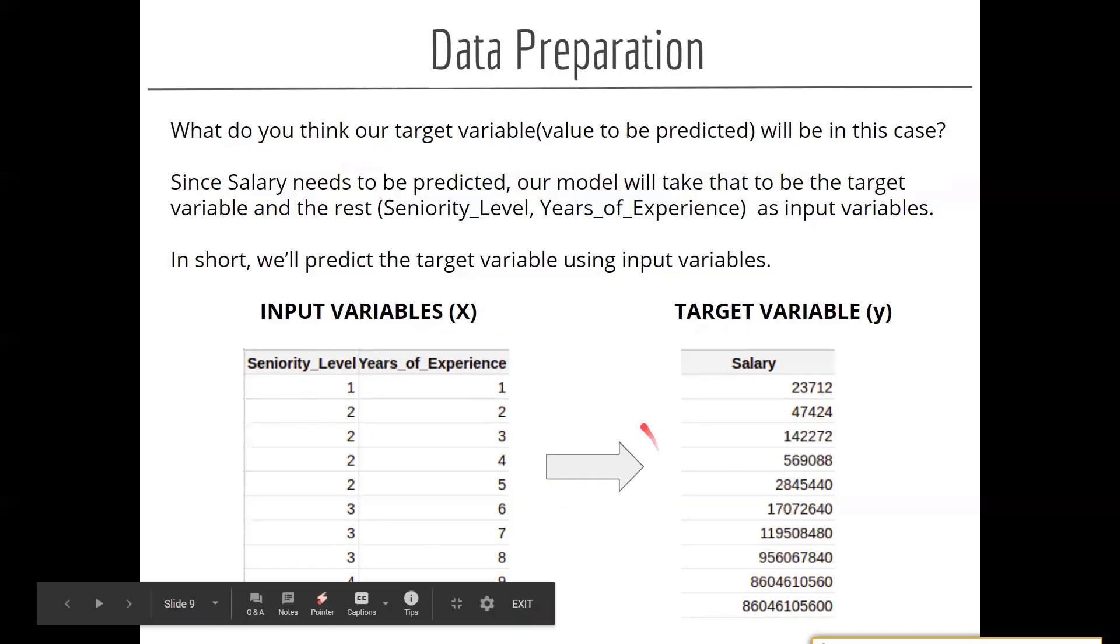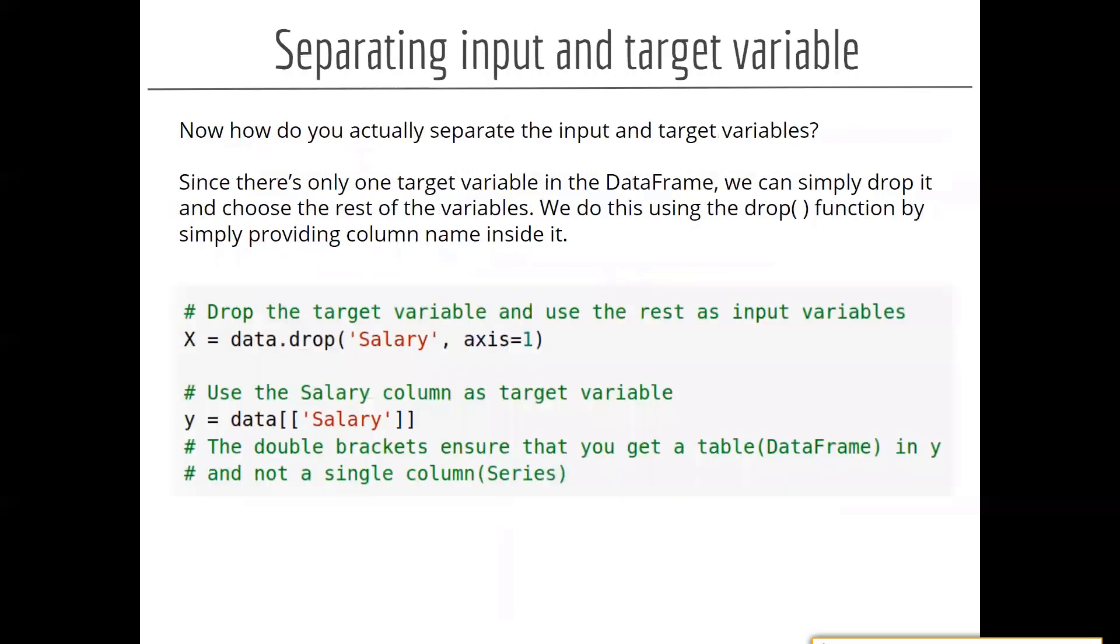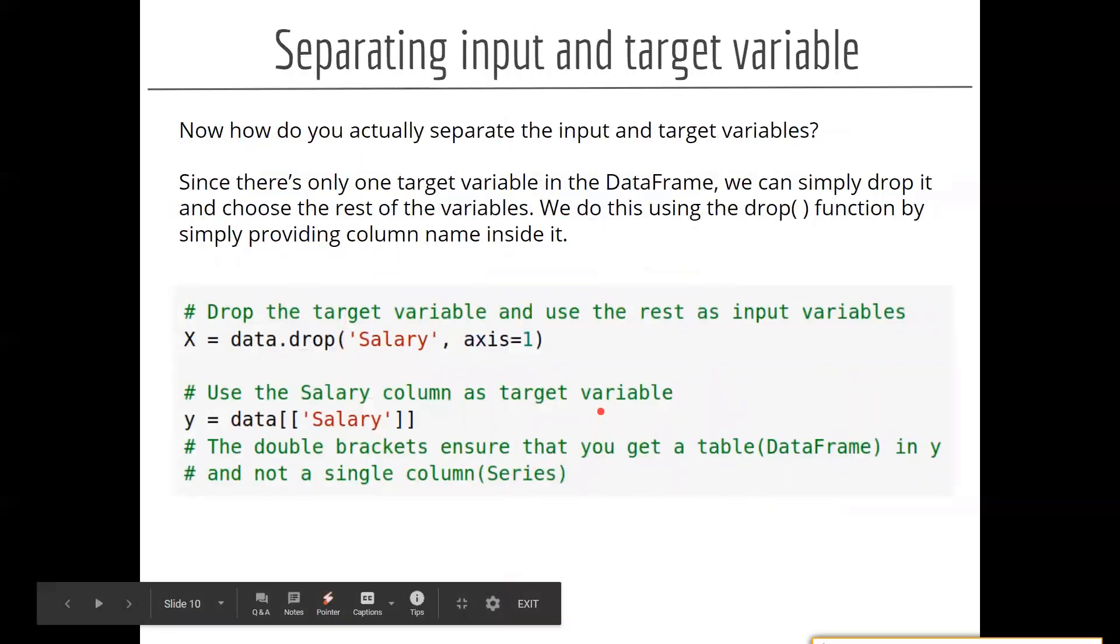And these input variables will feed into the algorithm, machine learning algorithm, so that we can get our target variable. Now our dataset is there, we have separated the dataset into input and target variables. And in order to do that, we have given a piece of code. I'm not explaining the code right now.